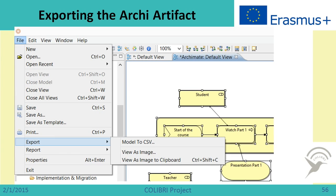You will also have a task to construct your own part of enterprise architecture. I suggest you export it by using Export > Show View as Image to Clipboard. When you have selected your drawing, it gets into the clipboard and you can then export it into a Word document, PowerPoint, or any other file, so we can see what you have made.